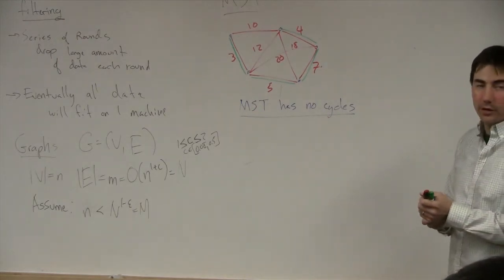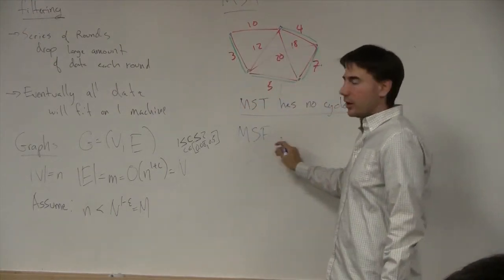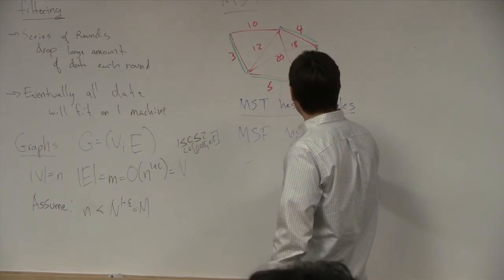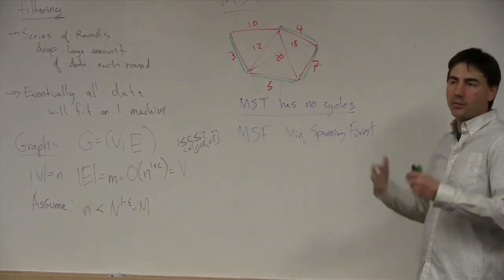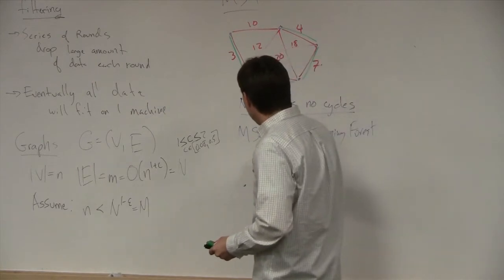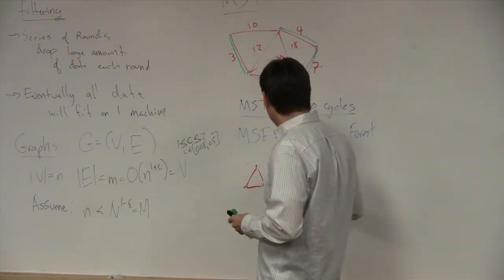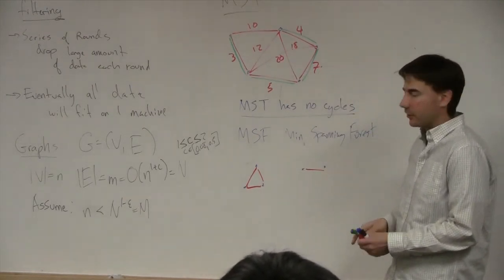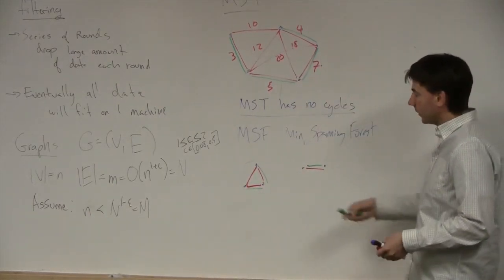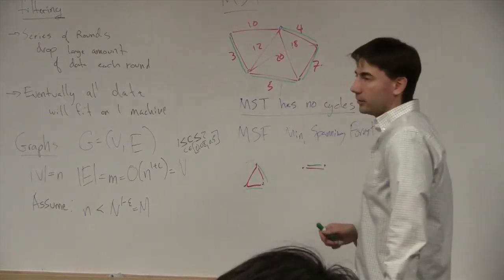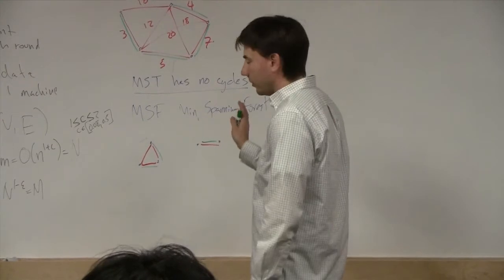There's also something called a Steiner forest where you can go through points which are not direct connections and make it a little faster, but we're not worrying about that. This graph is undirected, so we're not worrying about direction. To simplify analysis, I'm going to say that M equals N to the power 1 plus gamma.